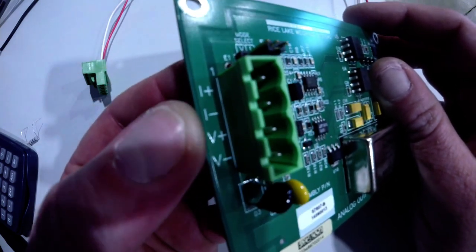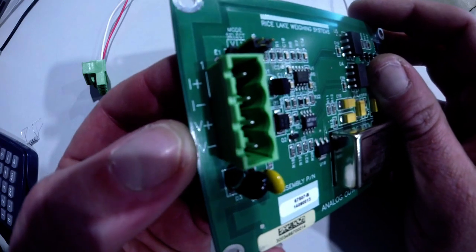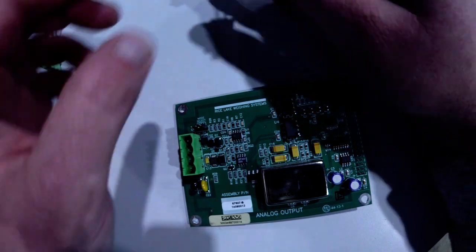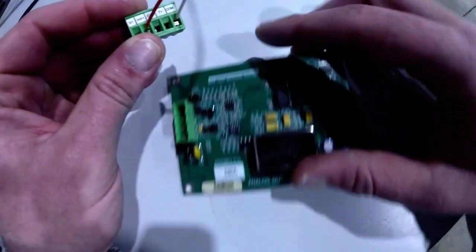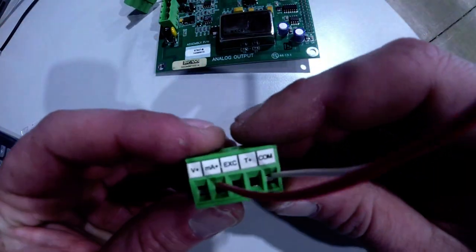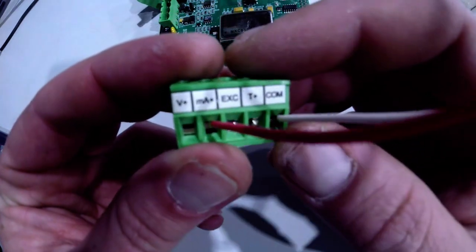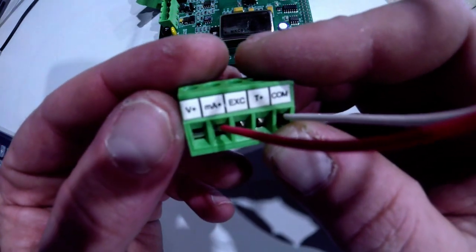On the side of this terminal it explains we have I plus and I minus, that's current plus and current minus, or voltage plus and voltage minus. On the back of our connector for our process meter, it's nicely labeled on the connector itself. We have our common, V plus if we were using a voltage output.